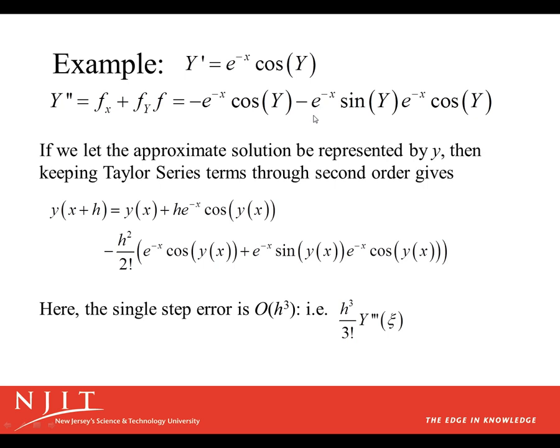If we let the approximate solution be represented by little y, then keeping the Taylor series terms through second order gives us y(x+h) = y(x) + h times y'(x) minus h²/2 times our terms e^(-x)cos(y) plus e^(-x)sin(y) times e^(-x)cos(y). And we put that all together.